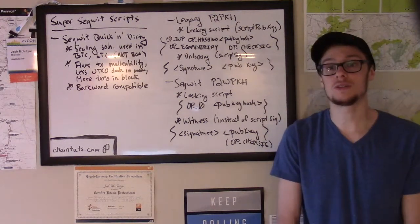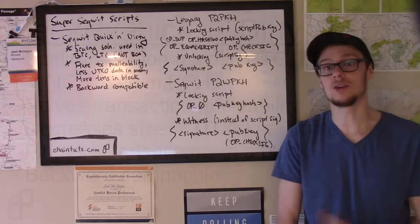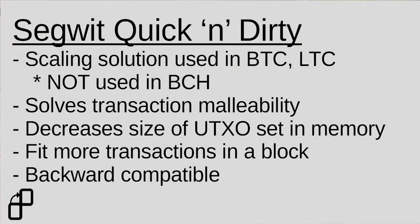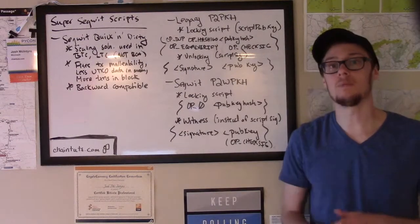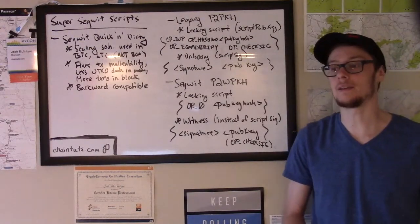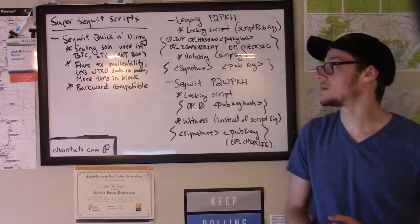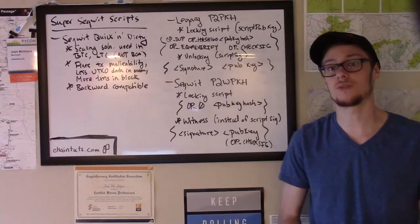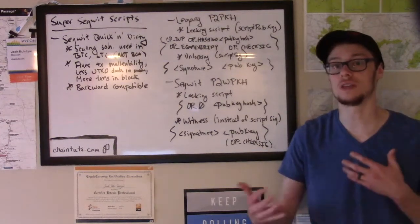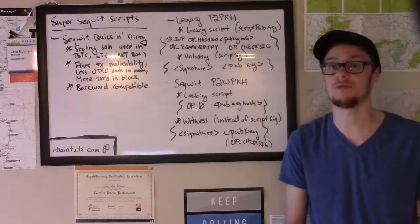The SegWit solution, since the data included in the UTXOs themselves are smaller, allows smaller computers to run fully validating nodes because fewer UTXOs have to be stored in memory for processing. Also, more transactions fit into the same one megabyte block with Bitcoin and Litecoin, because SegWit transactions put some of the transaction data in a separate data structure that's not counted in the same way towards the limit of how many transactions can fit in the block.